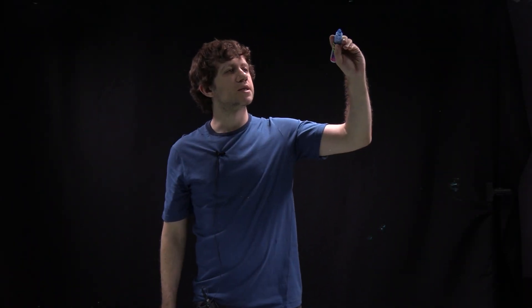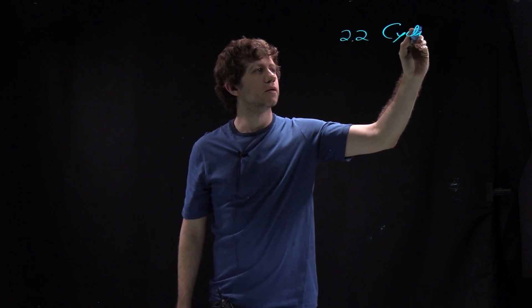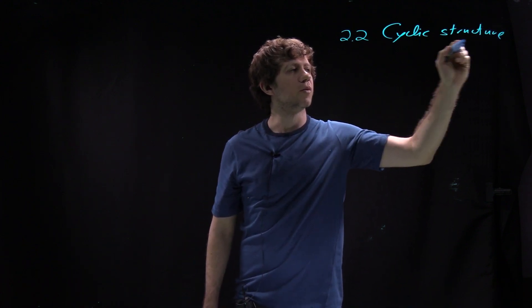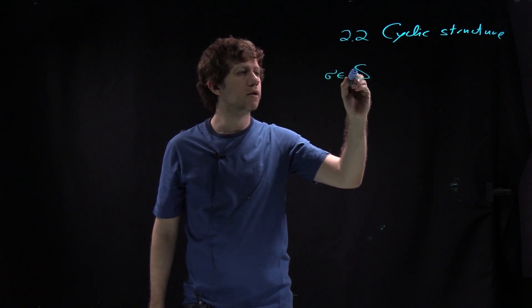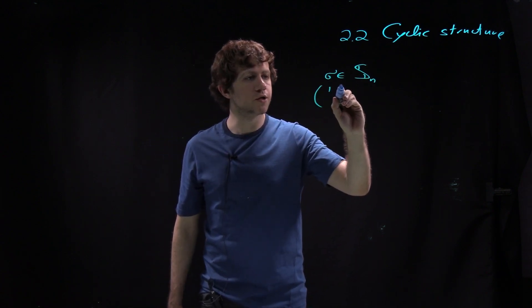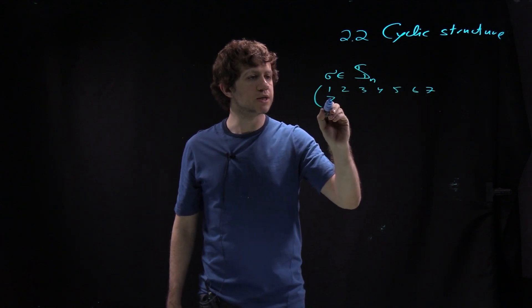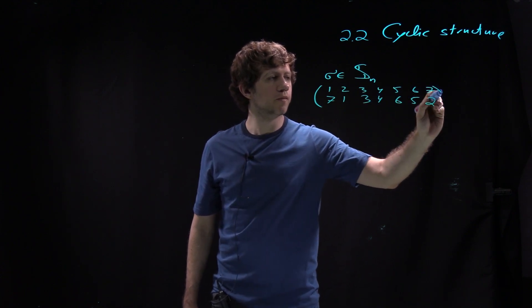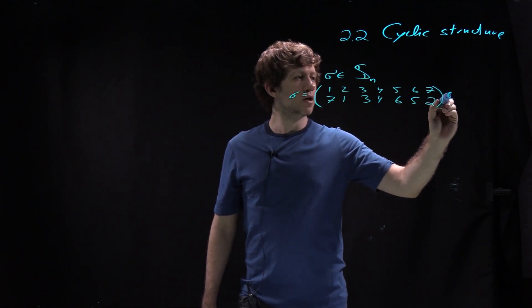Today we discuss the cyclic structure of a permutation. We start with a permutation sigma in Sn, and let's take a particular permutation mapping 1,2,3,4,5,6,7 to 7,1,2,6,5,3,4. So that's sigma in S7.